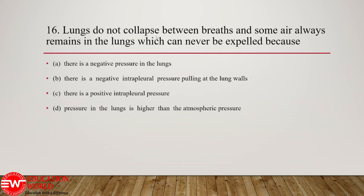Question number 16: lungs do not collapse between breaths and some air always remains in the lungs which can never be expired because of negative intrapleural pressure pulling at the lung walls. Intrapleural pressure is the pressure of the air within the pleural cavity; it is always negative, acting like suction to keep the lungs inflated and prevent them from collapsing. The negative intrapleural pressure is due to three main factors: surface tension of the alveolar fluid, elasticity of the lungs, and elasticity of the thoracic wall. The transpulmonary pressure creates the suction to keep the lungs inflated. Hence the correct option is option B.